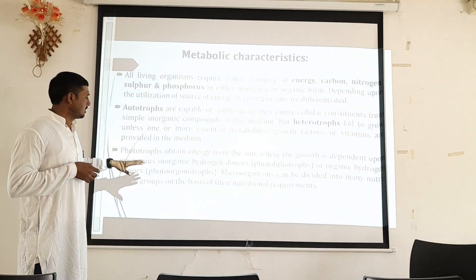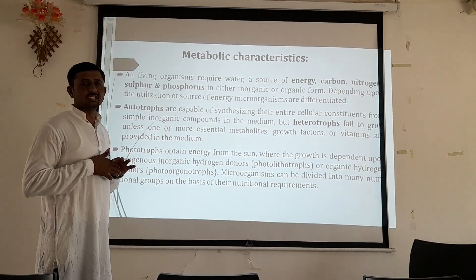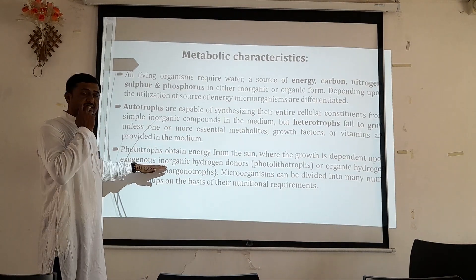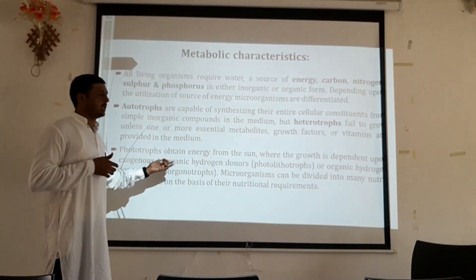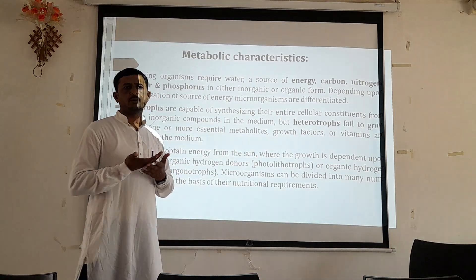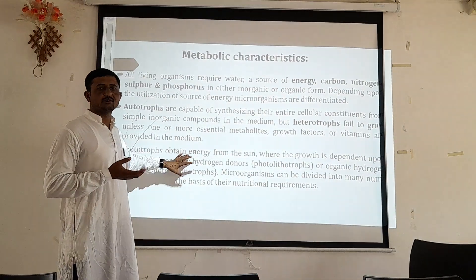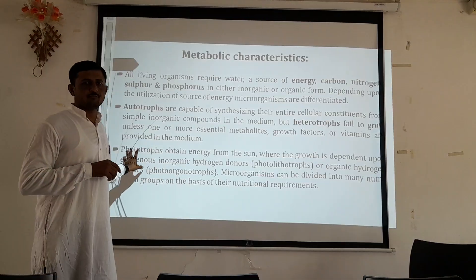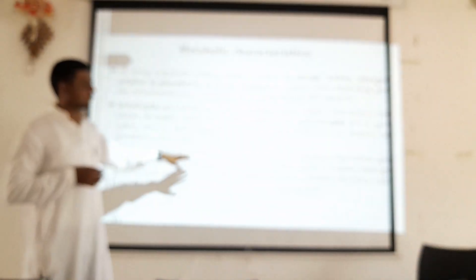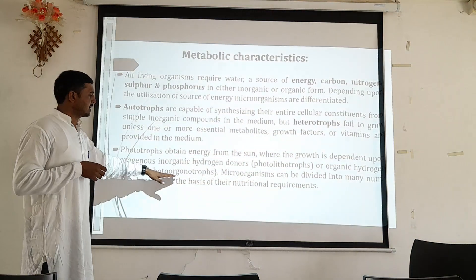Phototrophs are organisms that obtain energy from the sun — they use light as a source of energy for their metabolic processes, where growth depends on an exogenous inorganic hydrogen donor. When the organism uses inorganic substances for energy production, they are called photolithotrophs. If they use organic substances or an organic hydrogen donor, they are grouped as photoorganotrophs. Organisms are categorized into autotrophs or auxotrophs as two broad categories, and further based on which type of energy source they use.